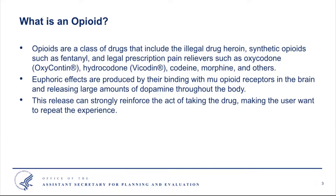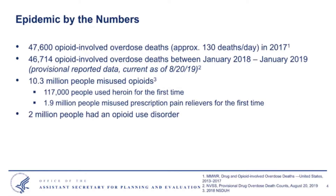All opioids are chemically related, and they interact with opioid receptors on nerve cells in the body and the brain. These interactions block pain signals and produce euphoric effects that release dopamine throughout the body. This release can strongly reinforce the act of taking the drug, making the user want to repeat the experience of using opioids.